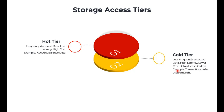An example for cold tier is transactions older than six months — from an online shopping cart or banking application. If transaction details are older than six months, there is very less possibility a customer will access these details. So we move them to cold tier. Cold tier doesn't mean data is deleted; data will be available but with some latency to retrieve it. This is a compromise — higher latency but lower cost.